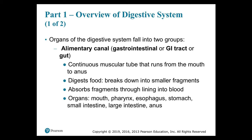The digestive system consists of a muscular tube — the digestive tract, also called the gastrointestinal tract or alimentary canal — and various accessory organs. The alimentary canal or GI tract, also called the gut, is a continuous muscular tube that runs from the mouth to the anus.